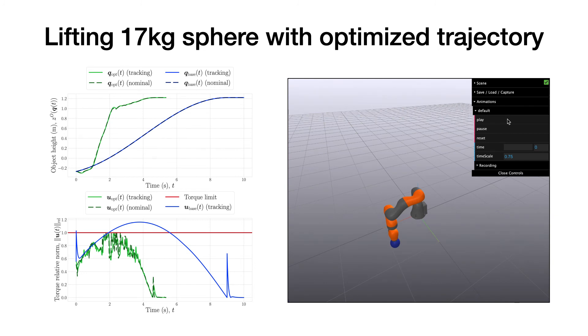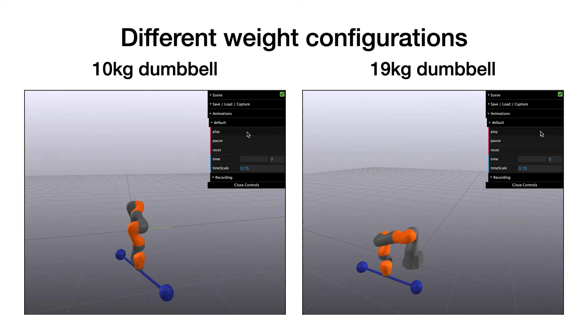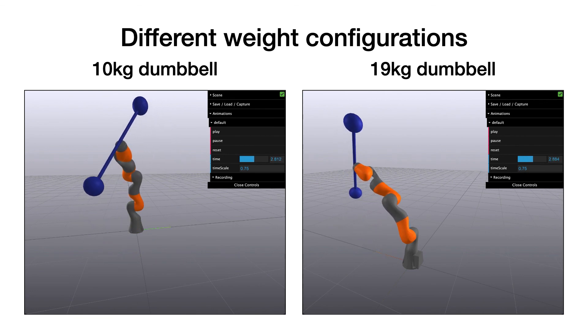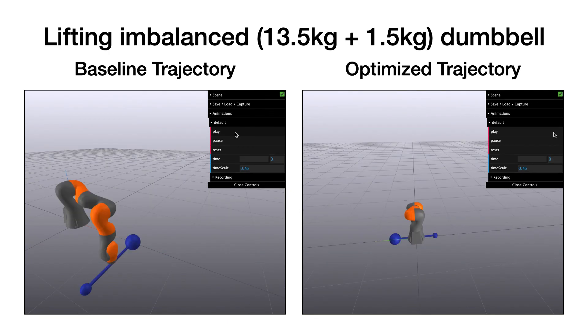When applied for a heavier weight, the method finds a valid trajectory satisfying the torque limits condition. The method is robust to changes in the weight configuration. These video clips demonstrate lifting of 10 kg and 19 kg dumbbells. The method also finds a valid lifting trajectory for an imbalanced dumbbell.